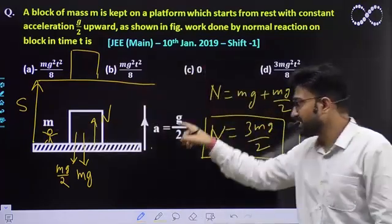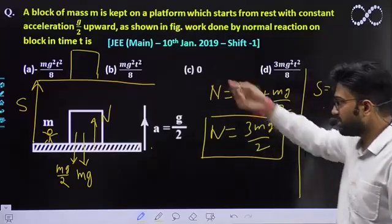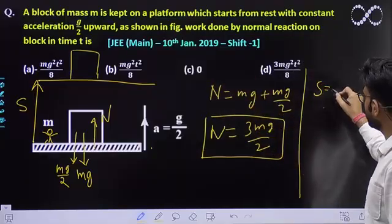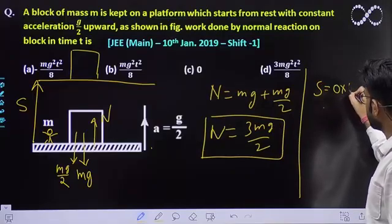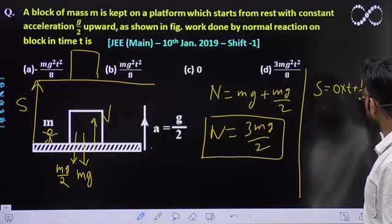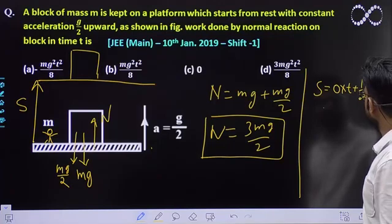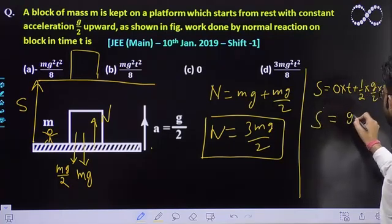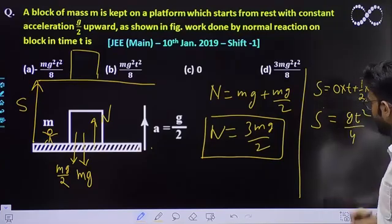Kyunki g by 2 se accelerate karna hai isko upar, displacement in t time kitna hoga? Kyunki initial velocity was 0, it would be equal to ut plus half gt square. Displacement comes out to be gt square by 4.